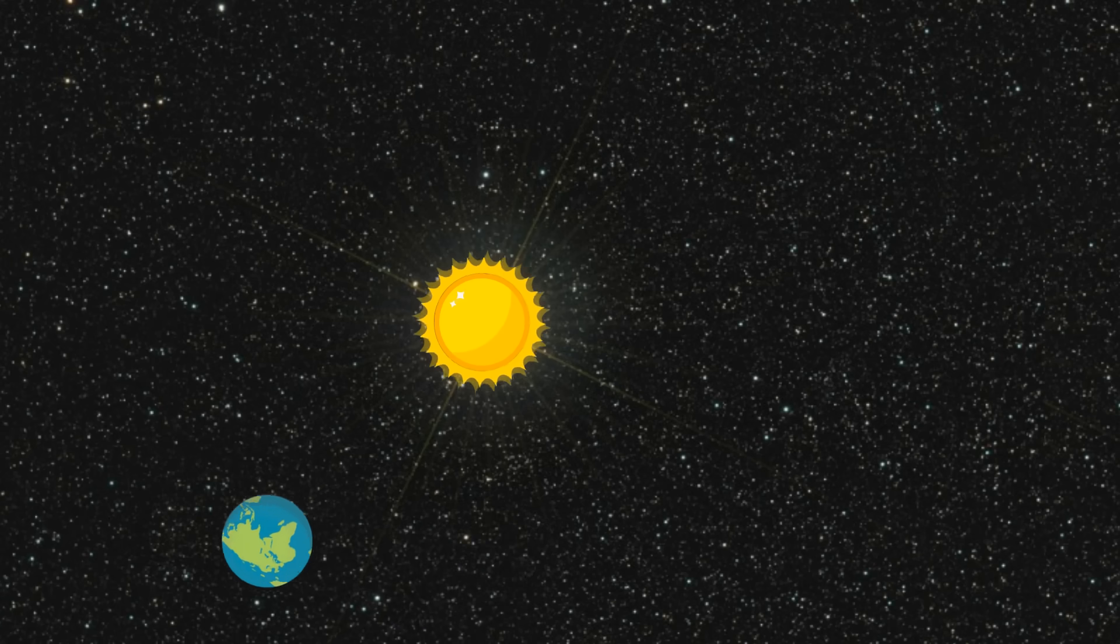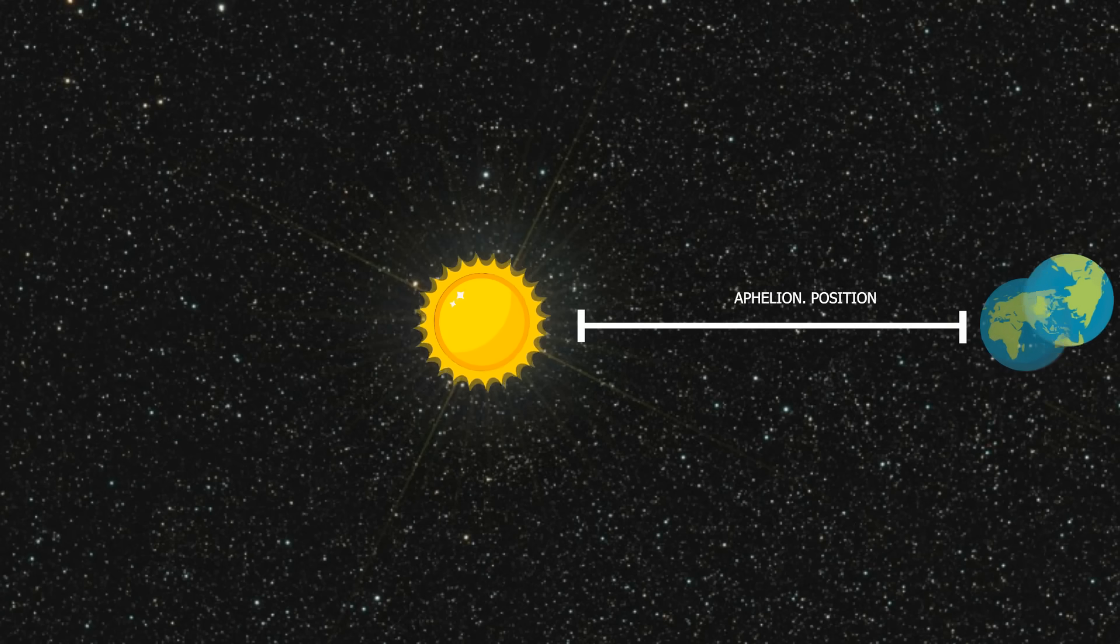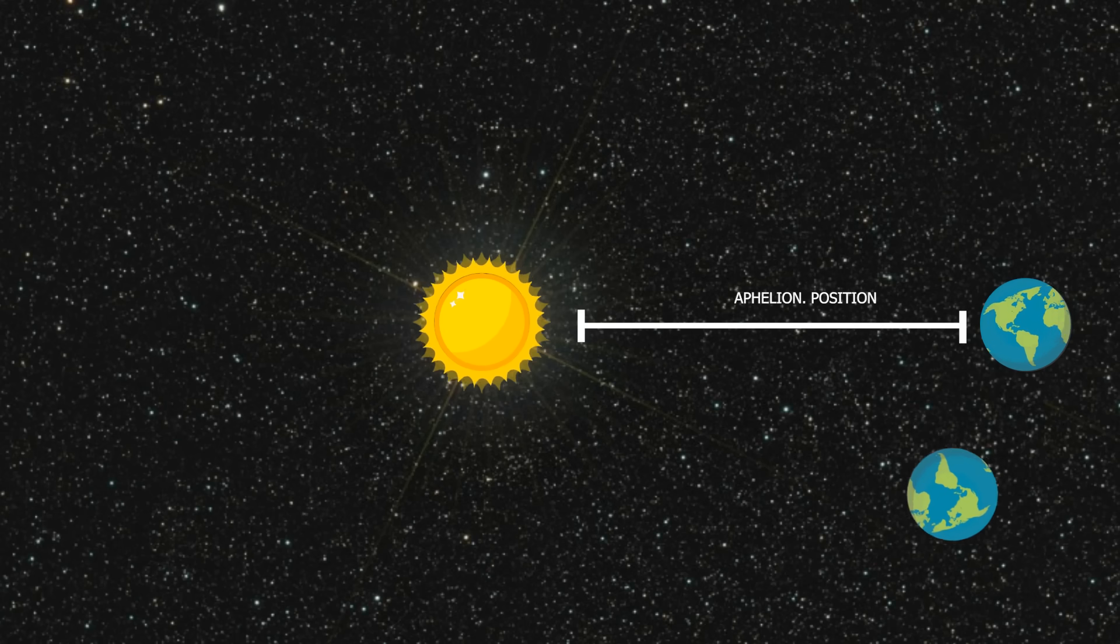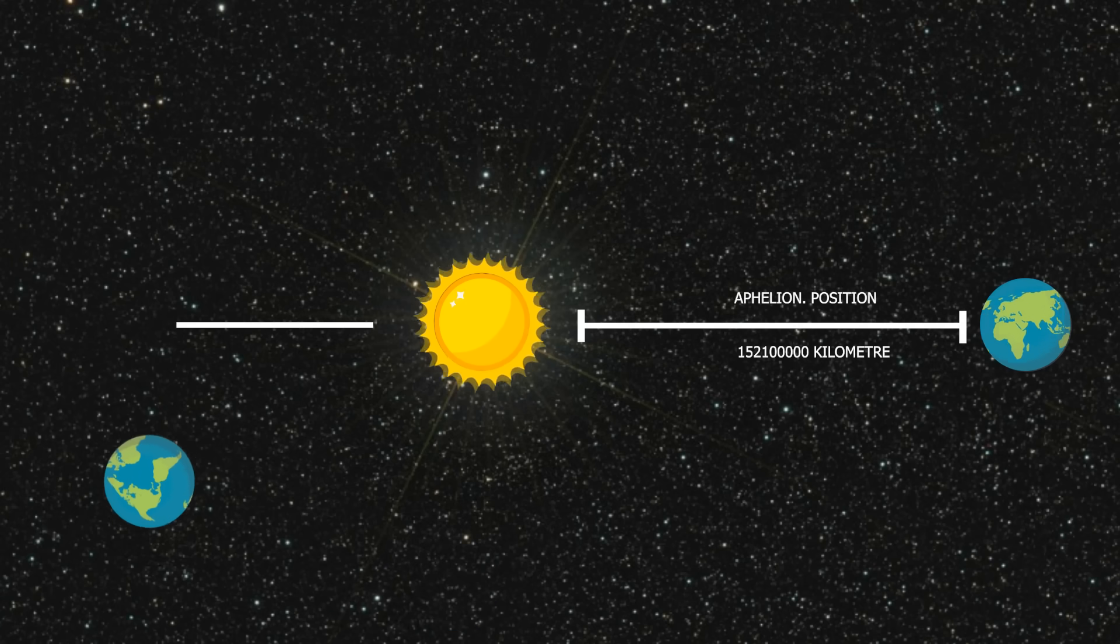The path of Earth around the Sun is not spherical but it is an elliptical one. During winter, Sun and Earth are farthest apart. This position is also known as Aphelion. At this position, distance between Sun and Earth remains around 15 crore 21 lakh km.